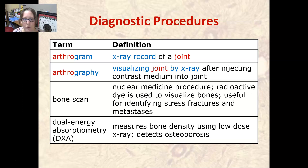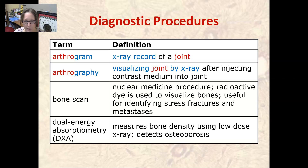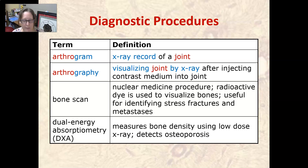An arthrogram is an x-ray record of a joint. Anytime you have 'gram' it's a record, and 'arthro' means joint. Arthrography is visualizing a joint by x-ray after injection of contrast medium into a joint, so 'graphy' is the process of getting the record that then is a gram.